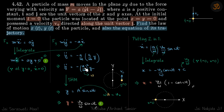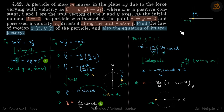The particle is performing SHM and starts at its equilibrium position (y=0) with velocity v₀. So our equation is y = A·sin(ωt). From the phasor diagram, the particle starts at the origin moving upward, confirming y = A·sin(ωt). The maximum velocity equals v₀ = ω·A, so the amplitude A = v₀/ω. Therefore y = (v₀/ω)·sin(ωt), where ω = a/m.